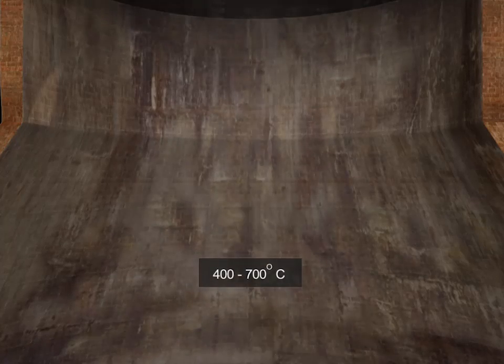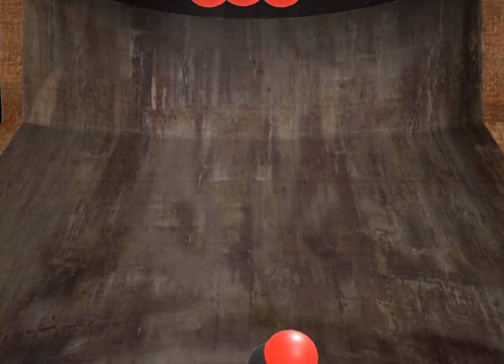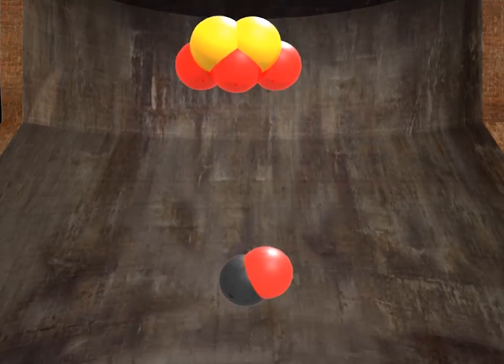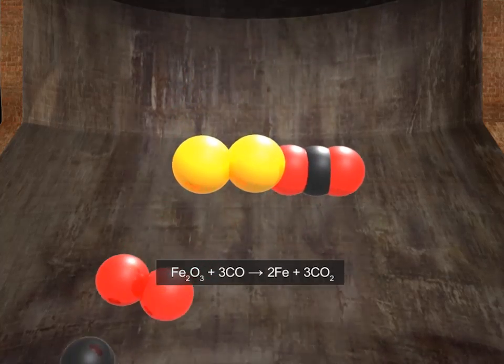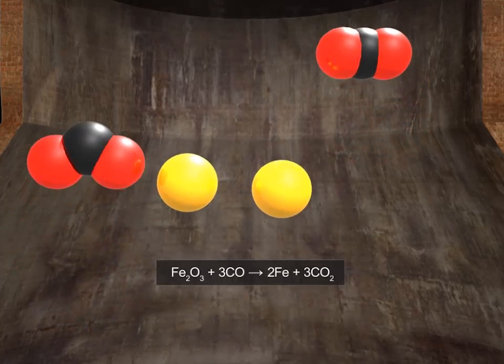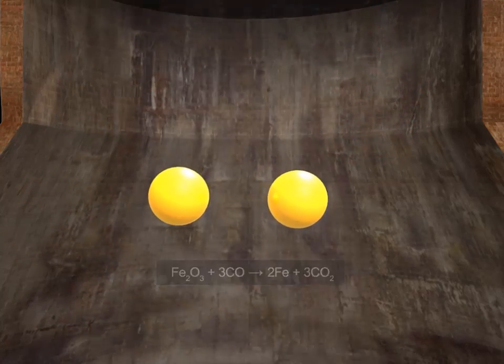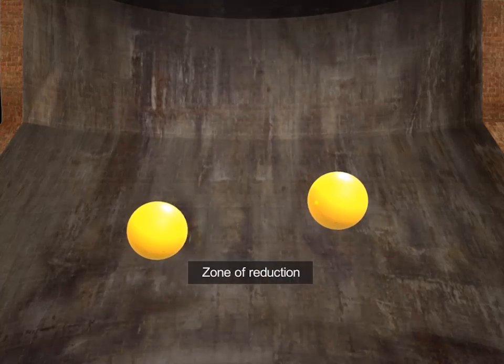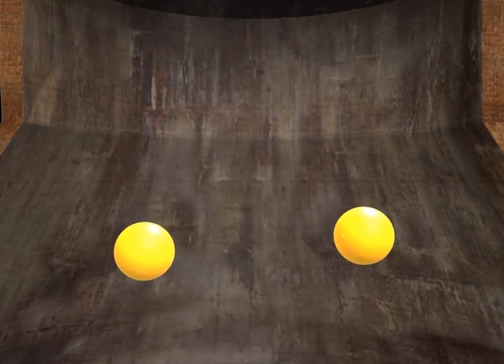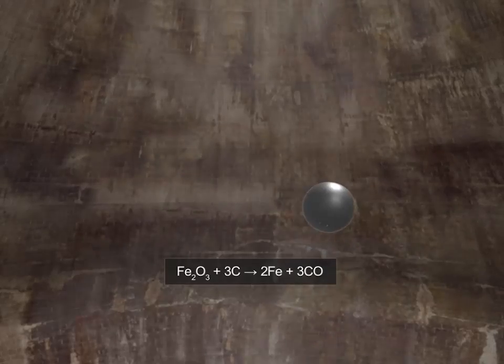The temperature of the upper region of the furnace is around 400 to 700 degrees Celsius. In this region, the descending charge is exposed to the action of carbon monoxide streaming up from the lower part of the blast furnace. Carbon monoxide reduces ferric oxide to iron. The iron produced is a spongy, porous solid. As reduction of iron oxide takes place in this region, it is called the zone of reduction. As the iron descends into the hotter regions of the furnace, it melts, and any unreduced ore is reduced directly by carbon.